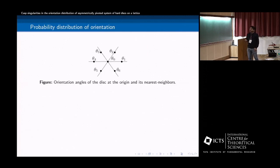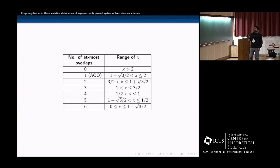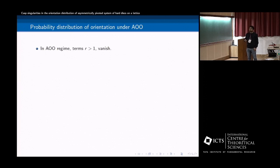Now comes the probability distribution. What happens to that? So here also, you can write the probability distribution as sum of six, actually seven. And where PR is the contribution corresponding to exactly r overlaps at the disk at the origin with its neighbor. So we are just finding out the probability distribution at the origin, the disk at the origin. So here is the regime. For example, x greater than two, there is no overlap. And this is AO condition where exactly one overlap can happen. And there, these are the other regimes where you can have two, three, four, five, six. At most, six overlap can happen in this model.